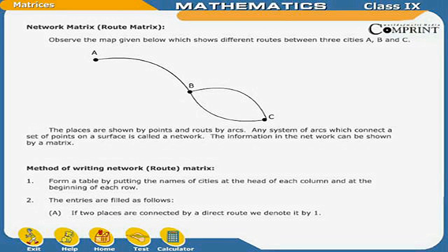Network or Route matrix: Observe the map which shows different routes between three cities A, B, and C. The places are shown by points and routes by arcs. Any system of arcs which connects a set of points on a surface is called a network. This information in the network can be shown by a matrix. To write a network or route matrix, form a table by putting the names of cities at the head of each column and at the beginning of each row. If two places are connected by a direct route, we denote it by 1.